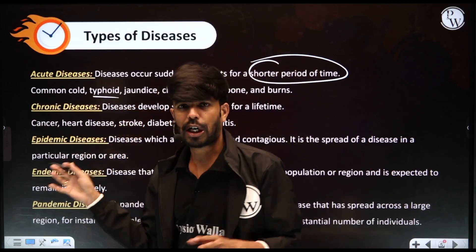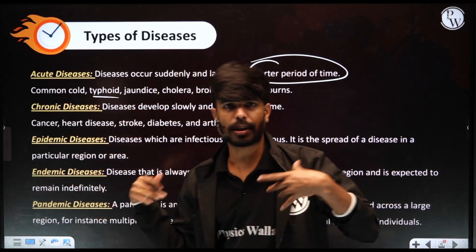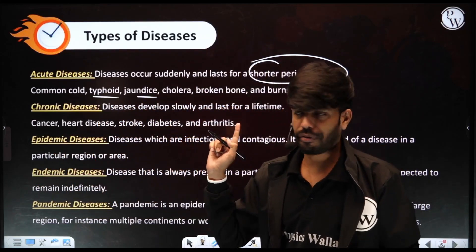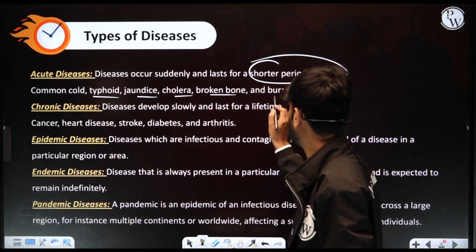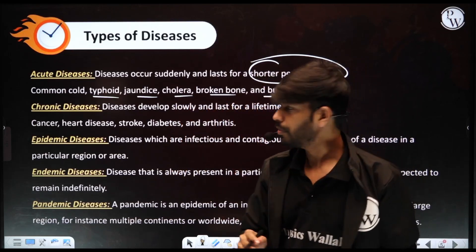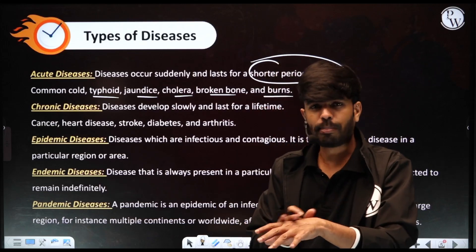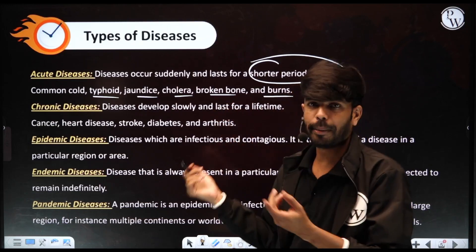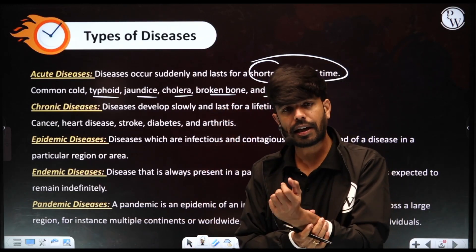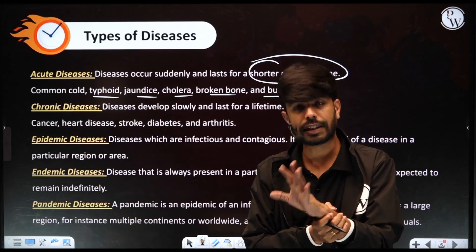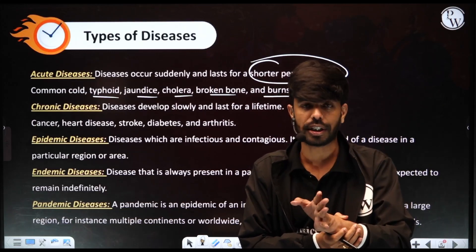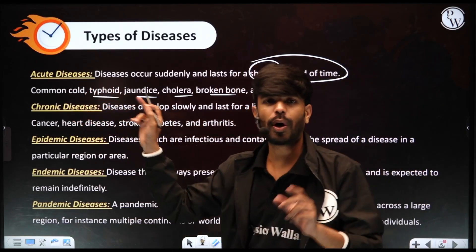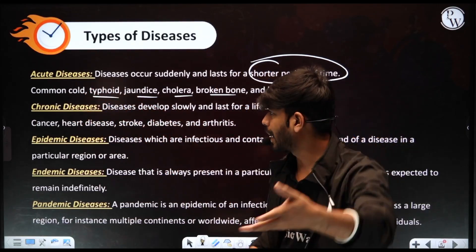Examples of acute diseases include common cold, which lasts just 3 to 5 days or 5 to 7 days. Similarly, typhoid — with proper treatment it also goes away. Other examples are jaundice, cholera, and broken bones. A fracture, if fully healed, does not become chronic. These are all common acute diseases that come and go.